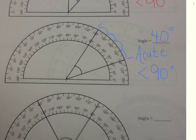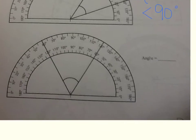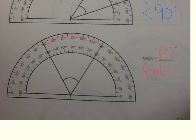Okay, the next one. Counting: 10, 20, 30, 40, 50, 60 degrees. Is that acute, right, obtuse, or straight? It is another acute angle. Why is it labeled acute? Because it is less than 90 degrees.